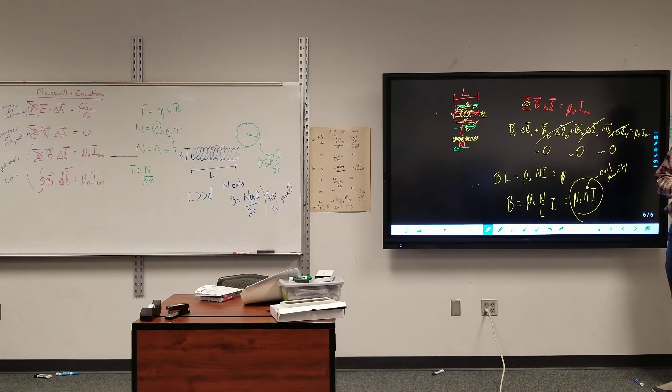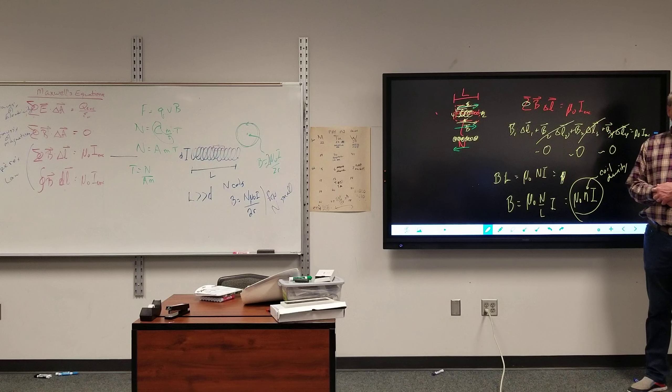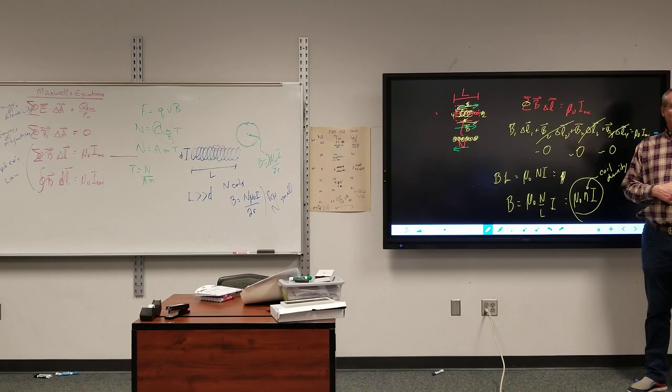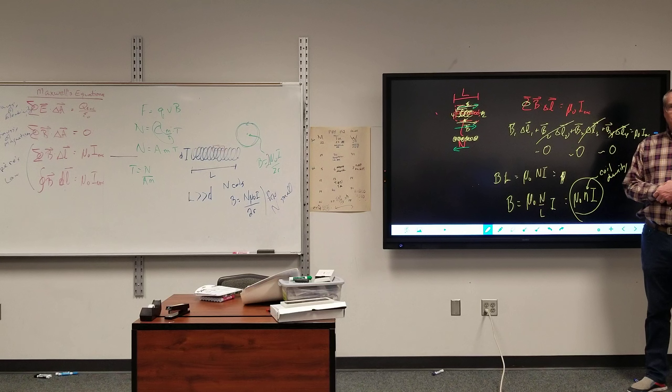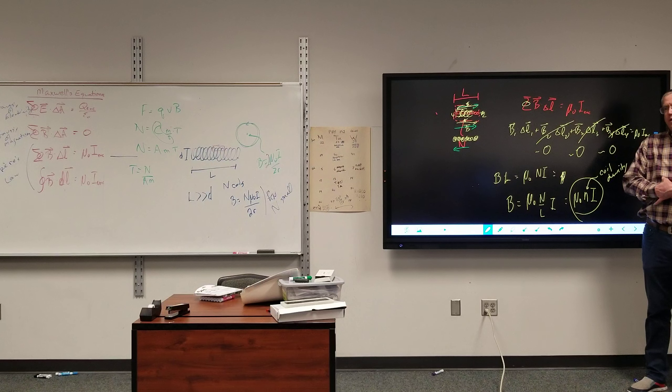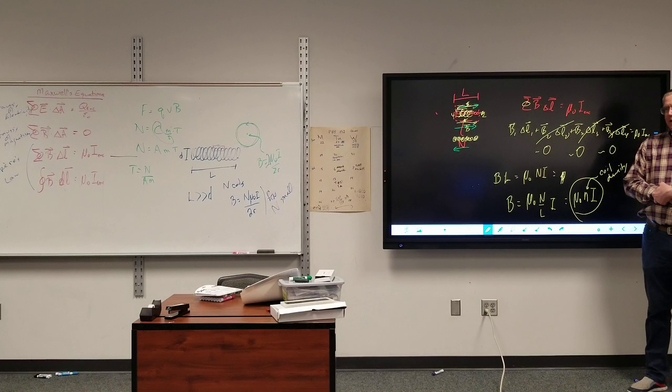But in a problem, what would we be given? I would give you length and diameter. Usually it's like, I've got two coils, or I've got a solenoid. And a solenoid is just that, right? Yeah, just a bunch of coils that are all lined up.